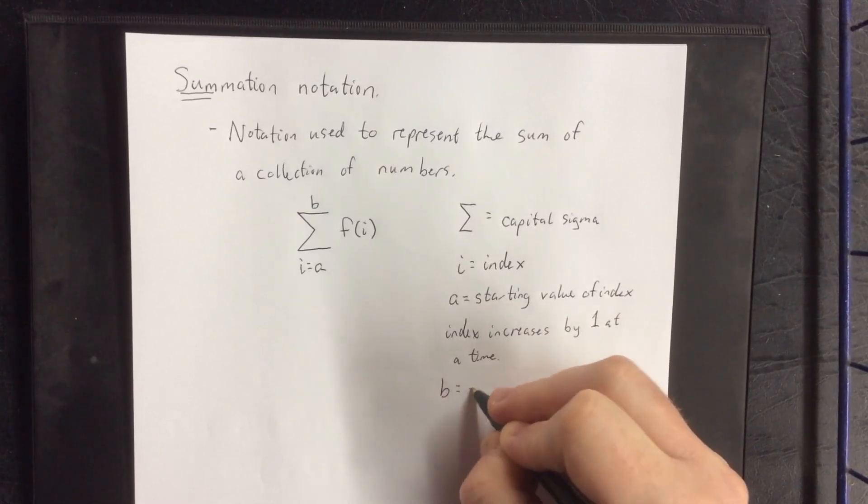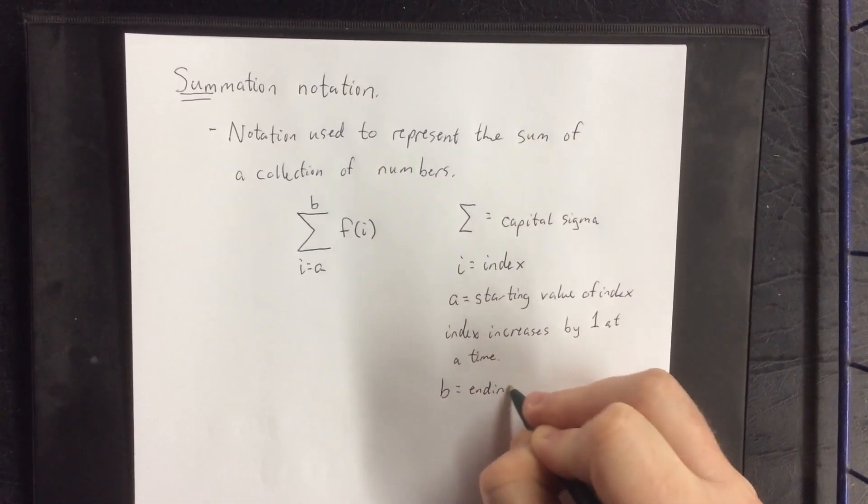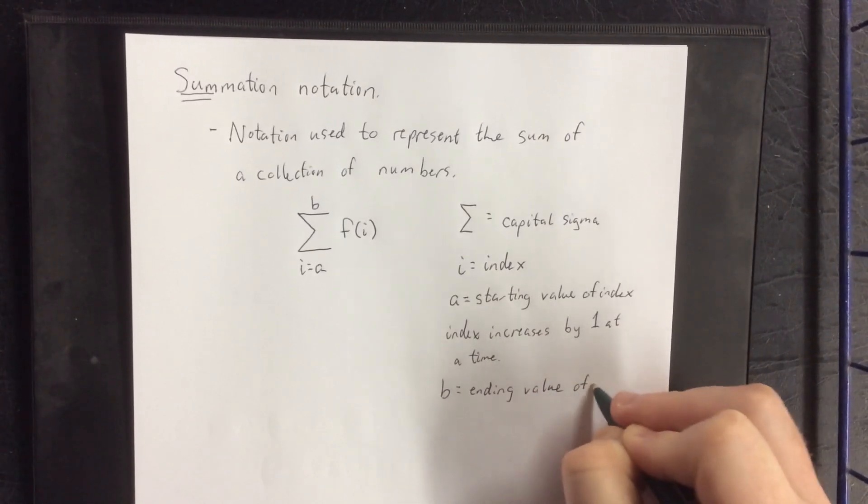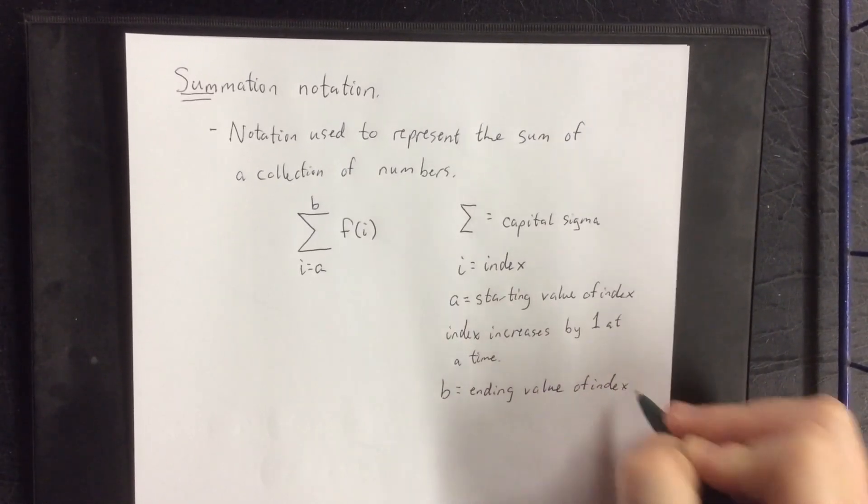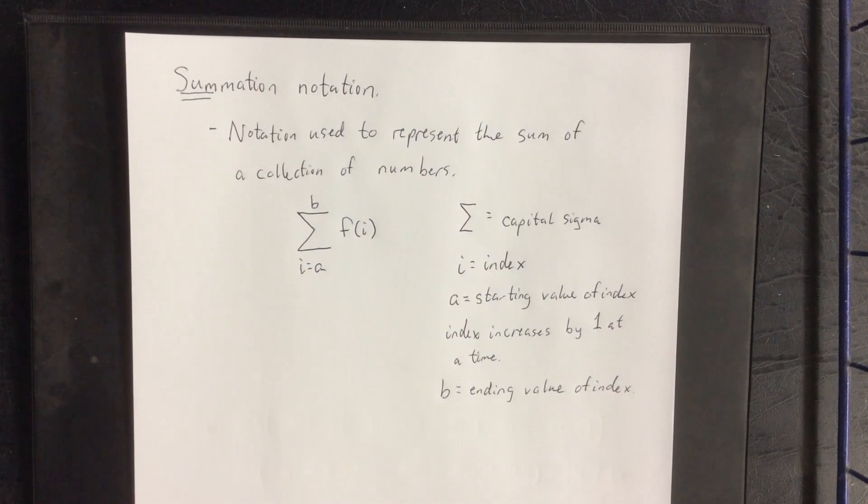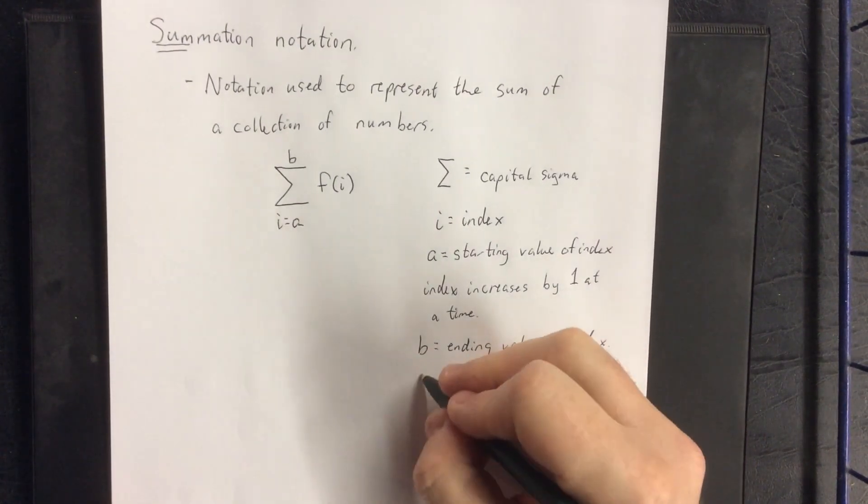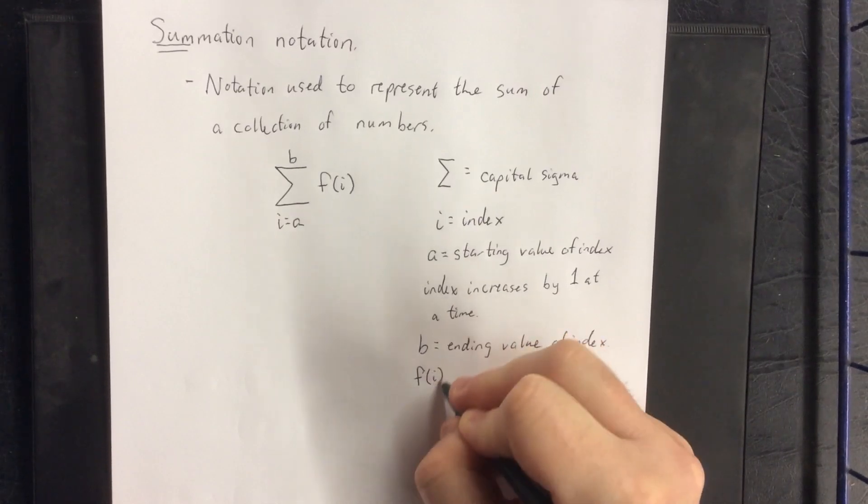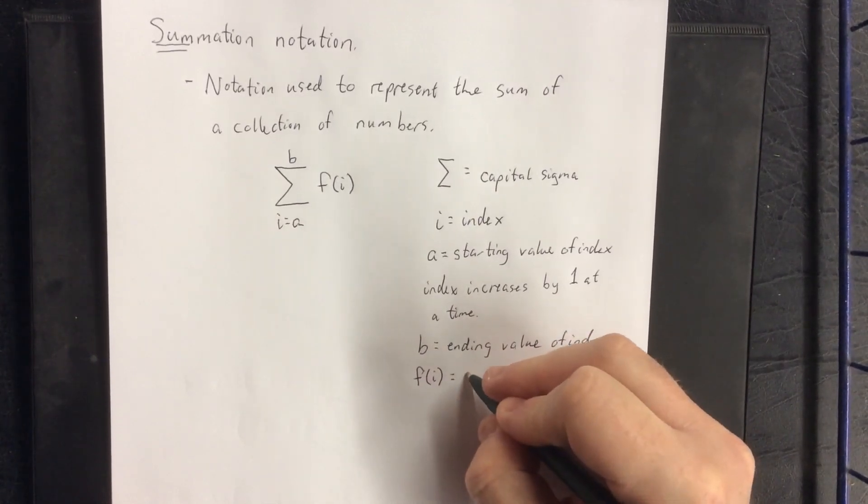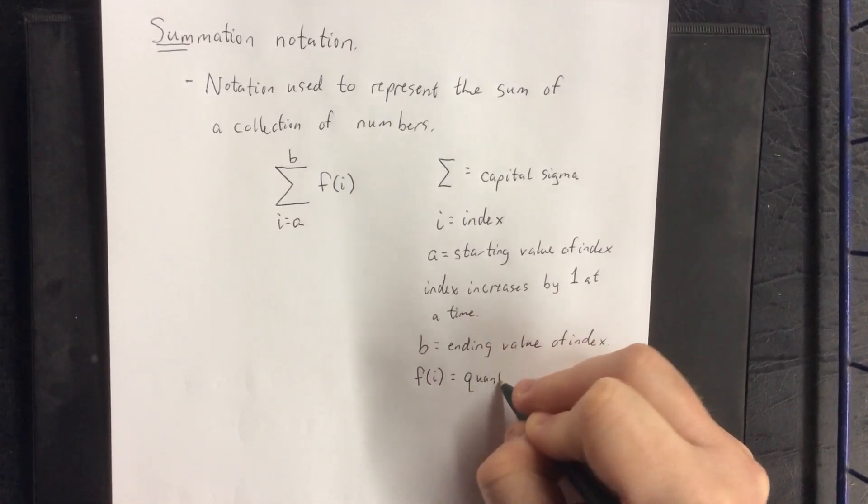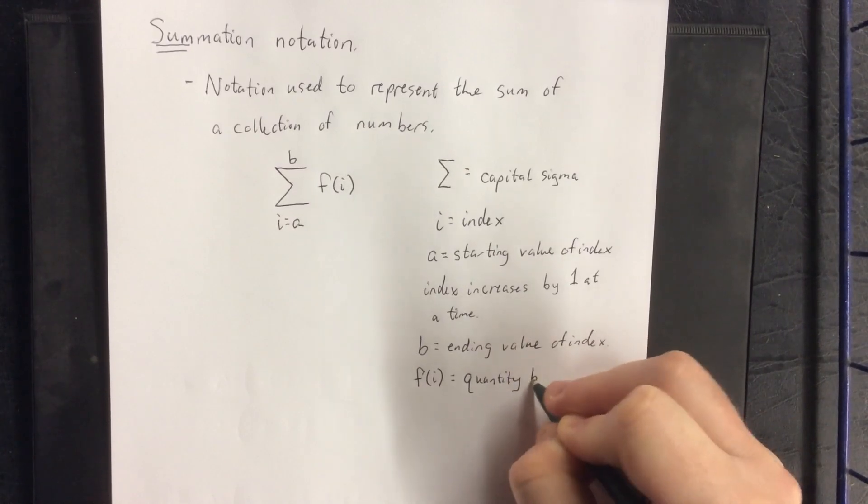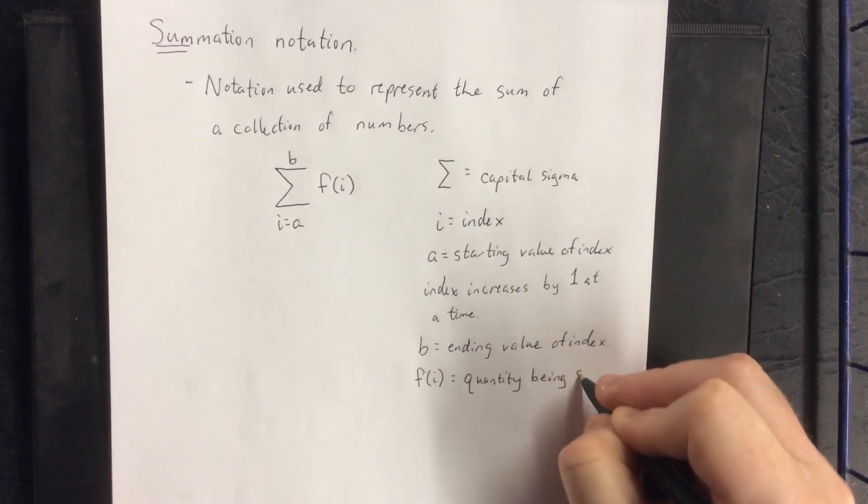B is going to be the ending value of the index. That F of I that you see over to the right of the capital sigma, this is the quantity being added, or the quantity being summed.